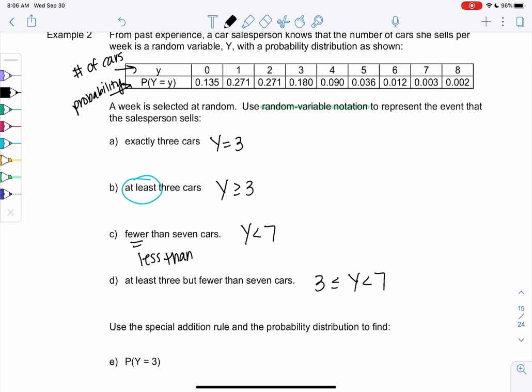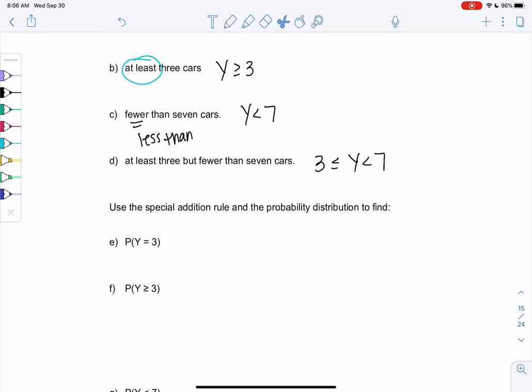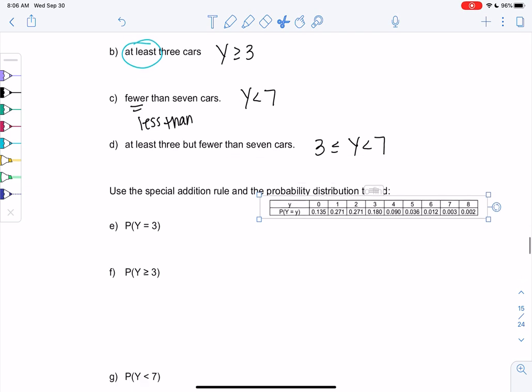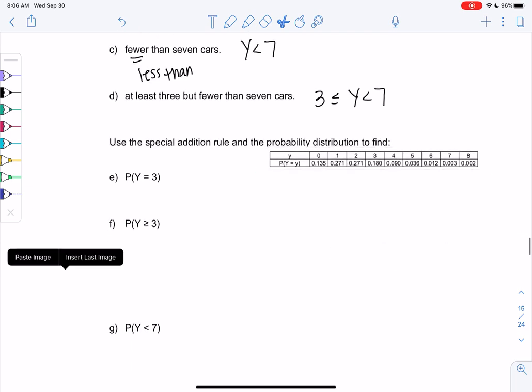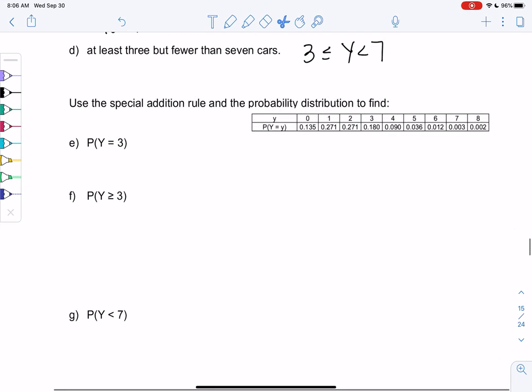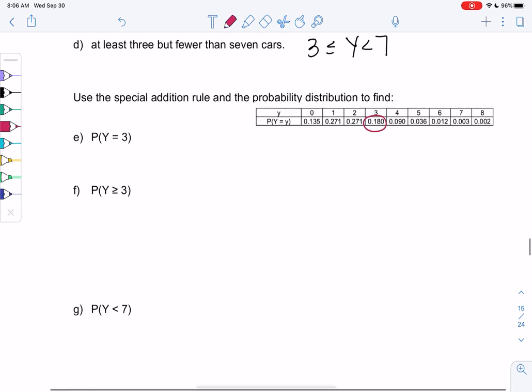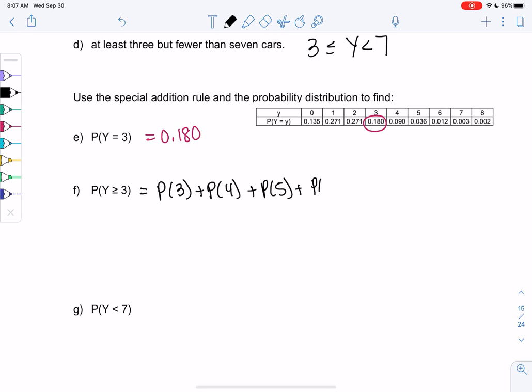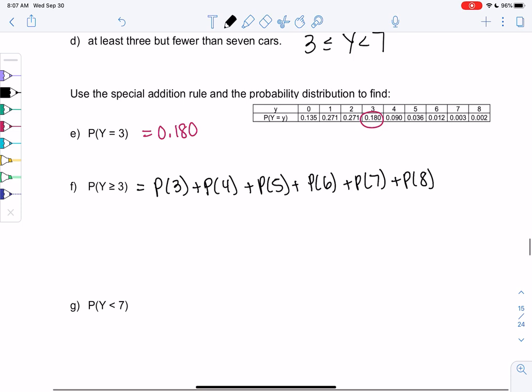So let's go ahead and use the addition property. Remember, we can add events, if we're doing an or to find each of the following. So I'm going to put the chart down here, just so we can still see it. So the probability of 3, selling 3 cars, that's straight from the table. It's just 0.180. At least 3 cars, this is the addition property. It means probability of 3, or 4, or 5, or 6, or 7, or 8. So we're basically going to add anything that's 3 or more.